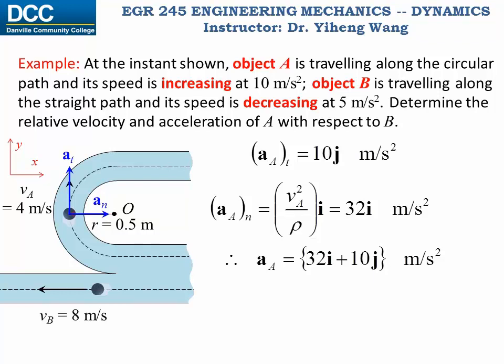For object B, it is doing rectilinear motion, its speed is decreasing at 5 meter per second squared, which means that its acceleration is in the opposite direction of its velocity. Since its velocity points to the left, the negative x direction, therefore the acceleration of object B points to the right, or positive x direction, being 5i.